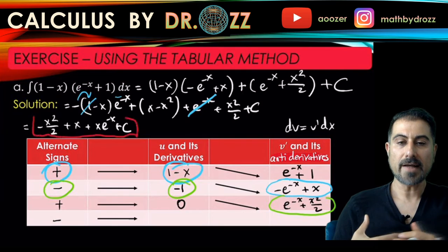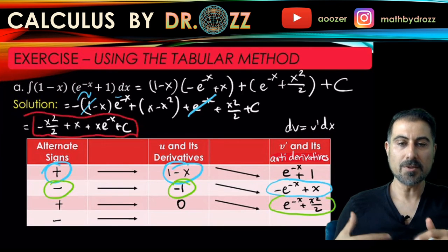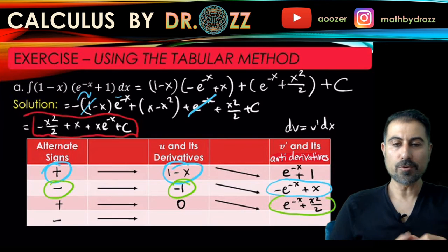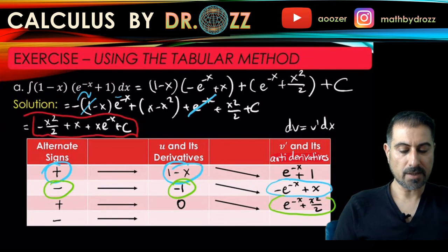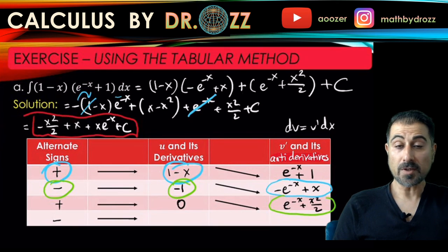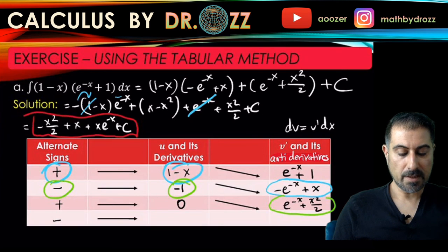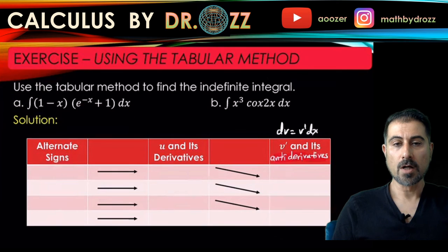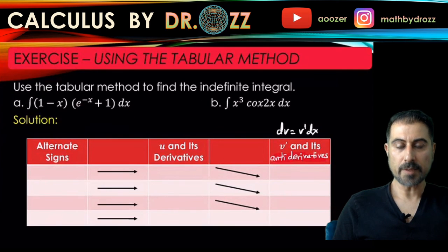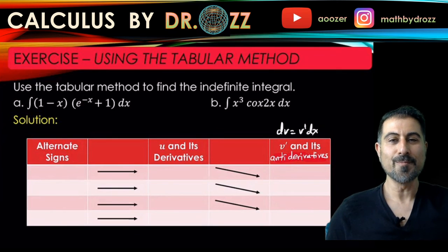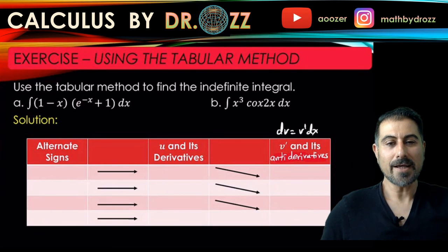As you can see, you are still detouring of calling u and dv along the way. Once you have this nice table, you can write down the value of the integral in one shot. For part b, I have another video with x cubed cosine 2x dx, so I'm going to finish this video right now. Please continue to my next video. All right, bye.